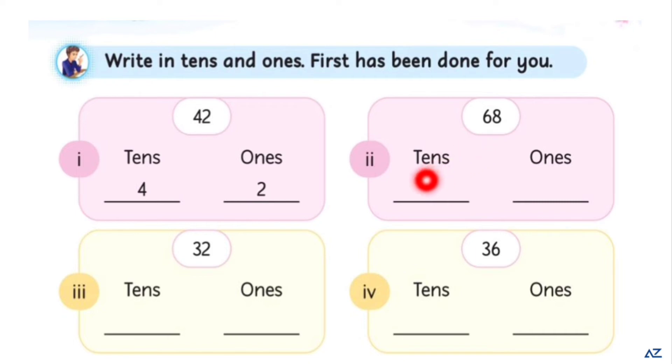68, write here number 6 and number 8. 32, write here number 3 and 2. This is number 36, write here number 3 and 6.